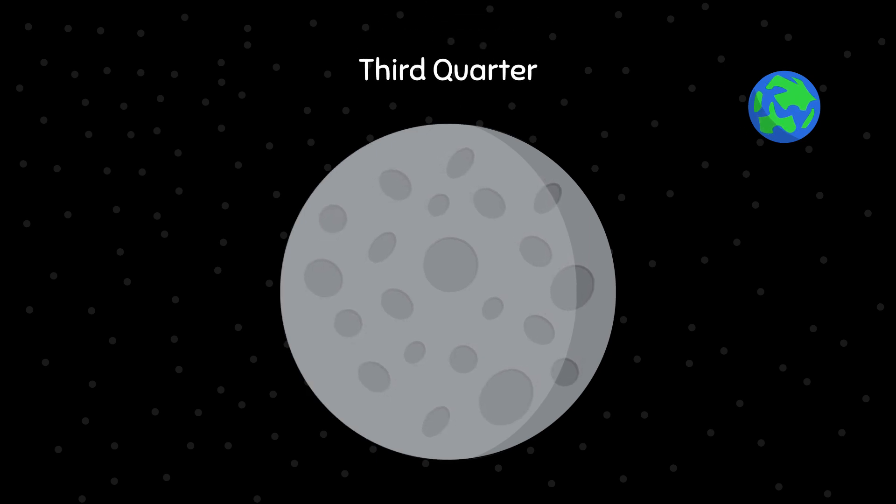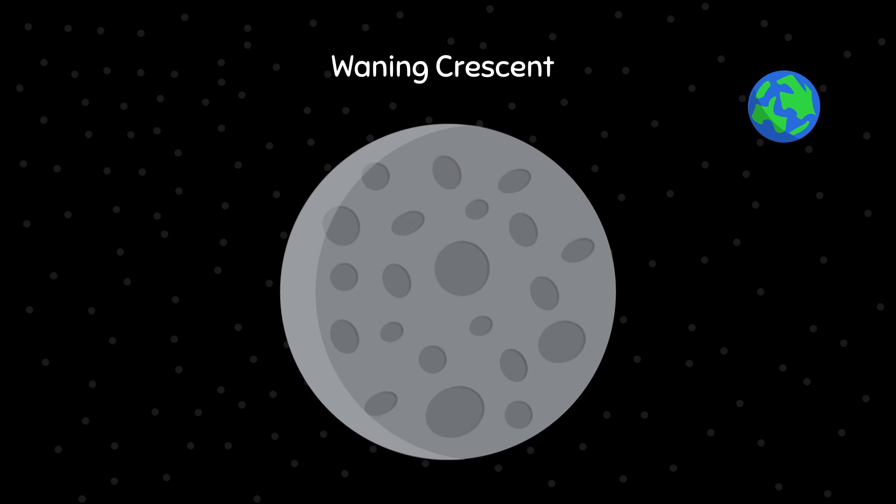The phase Third Quarter means the left side of the Moon is 50% lit and the rest is dark. The phase Waxing Crescent means the left side of the Moon is 49 to 1% lit. Then the whole process repeats.